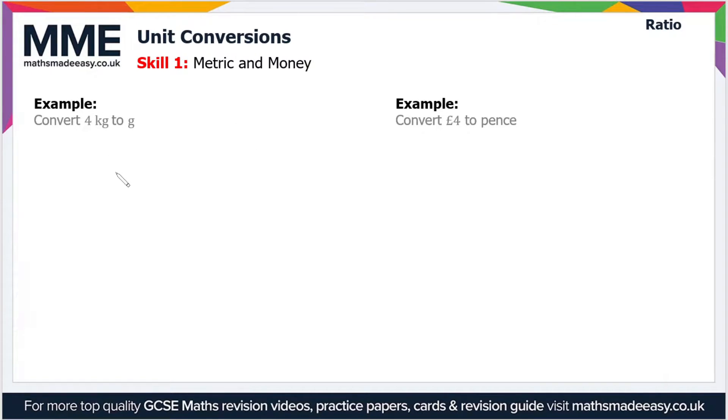In the first example we have to convert 4 kilograms to grams. The conversion we need is that 1 kilogram—sorry let me just redraw that—1 kilogram is equal to 1000 grams. Anytime you have a kilo-something, like kilometer or kilogram, it's always 1000 times the base unit.